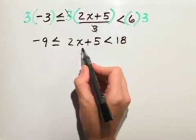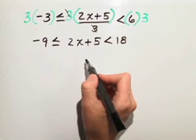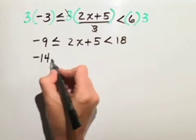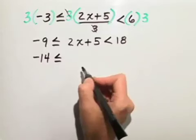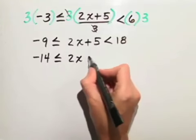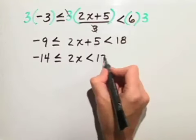Now we're trying to isolate our variable x in the middle, so we subtract 5 from all 3 parts. Negative 9 minus 5 is negative 14, is less than or equal to 2x, because 5 minus 5 is 0, which is less than 18 minus 5, which is 13.